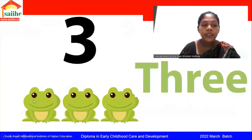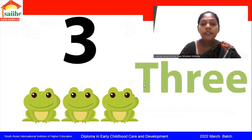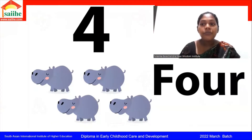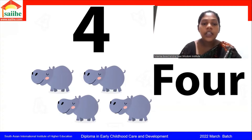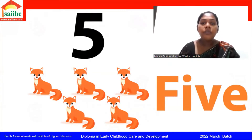Number 3. 3 frogs. Everybody say 3 frogs. Next number is 4. Everybody count: 1, 2, 3, 4. Next, 5 — 5 foxes. Number 5.